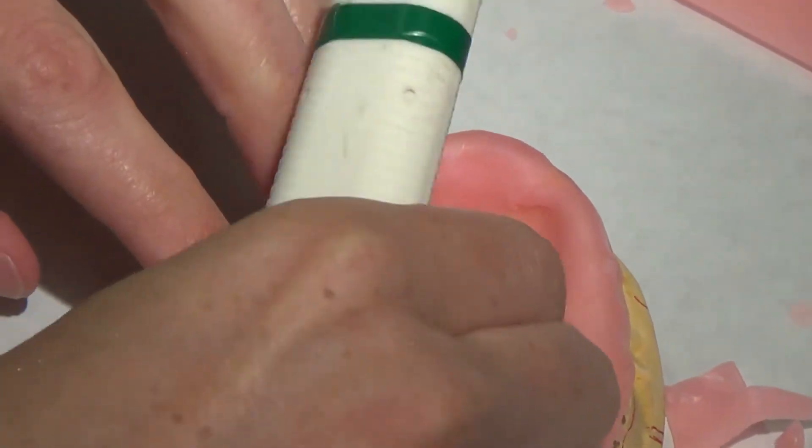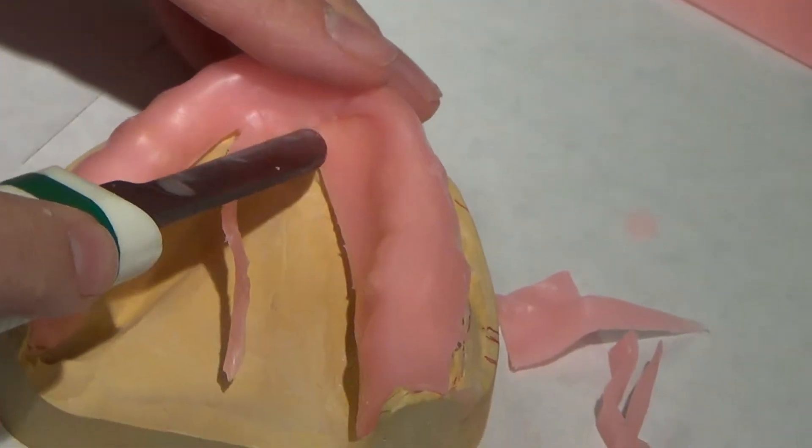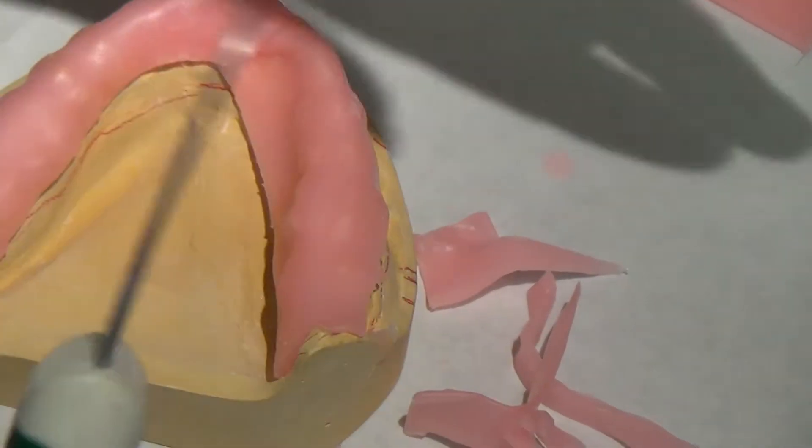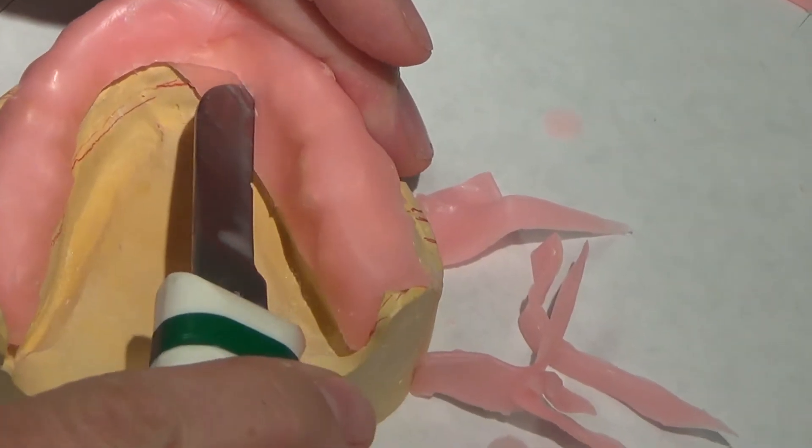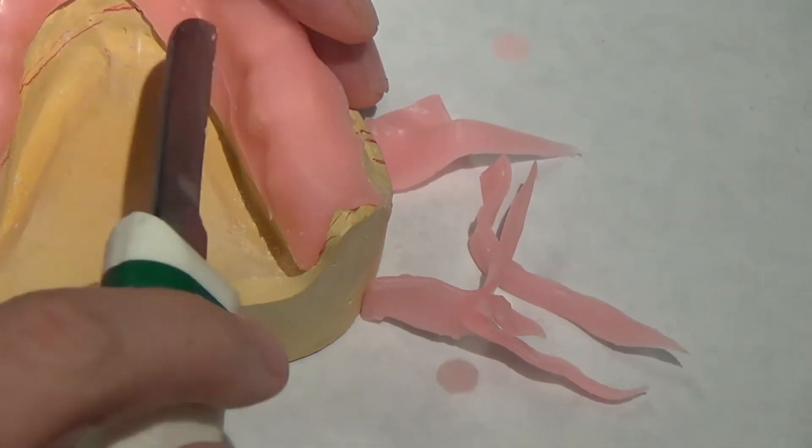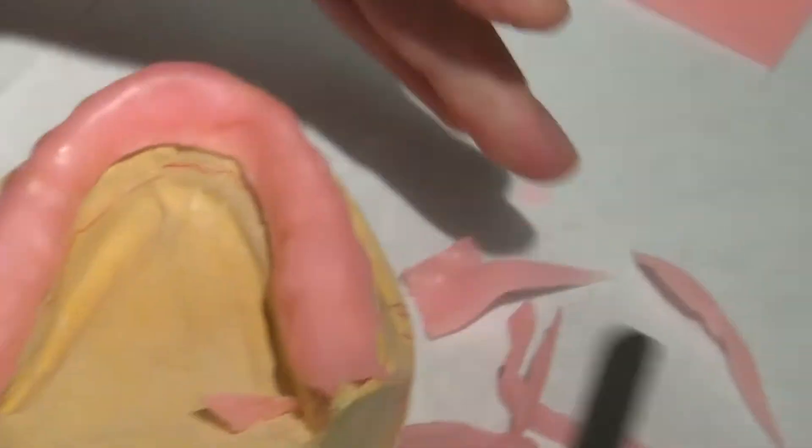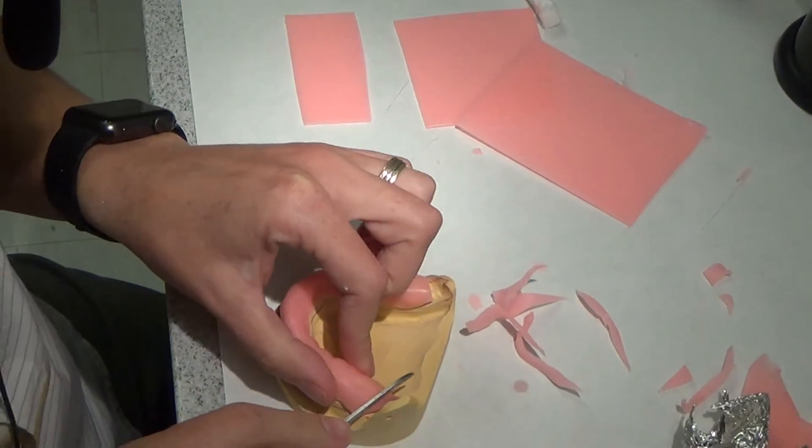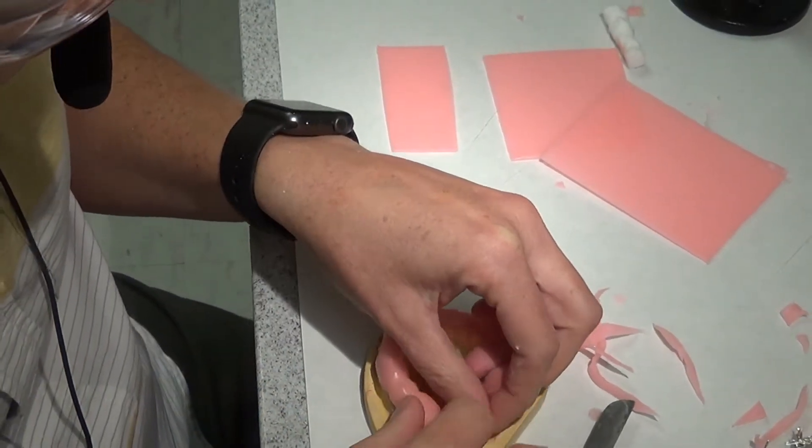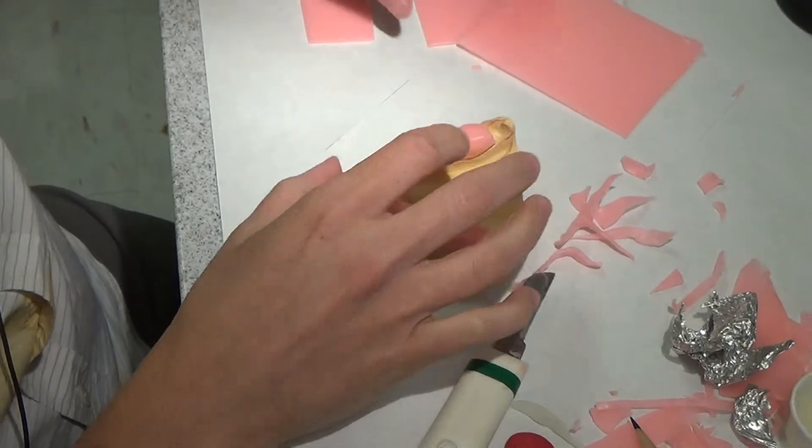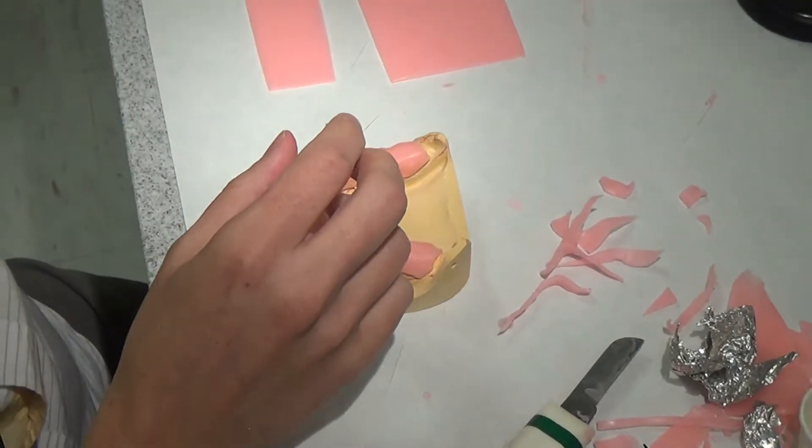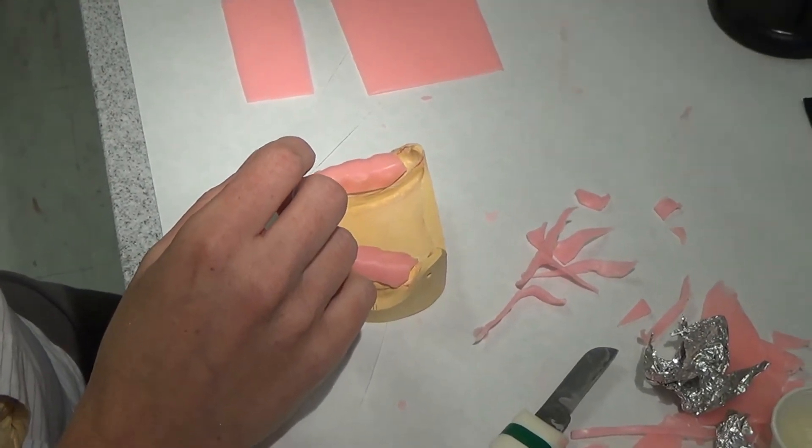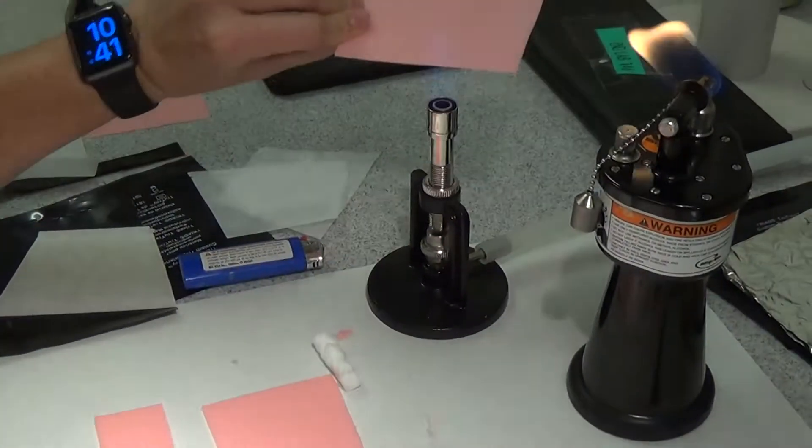And there are different ways to do this. Some people would put the whole layer on first and then come back and just add it over the teeth. You'll find that the more faculty you encounter while you're here, we all have our own ways of doing things. Doesn't mean they're wrong, just what works well for us. And you'll find what works well for you. It's the concept that you need to understand.